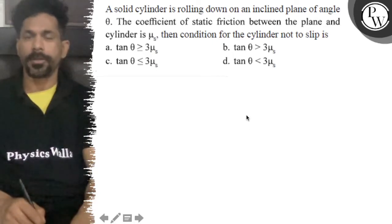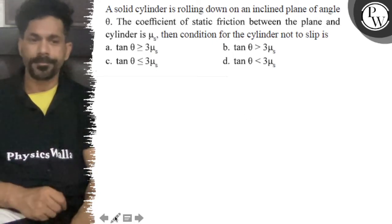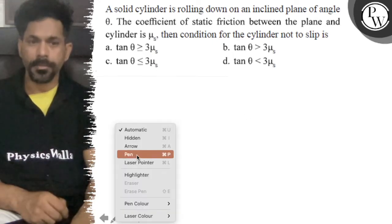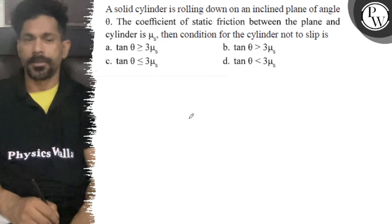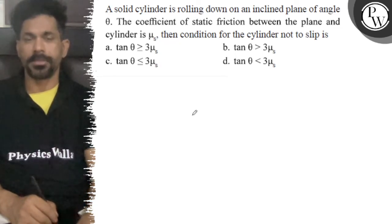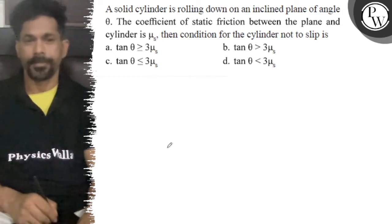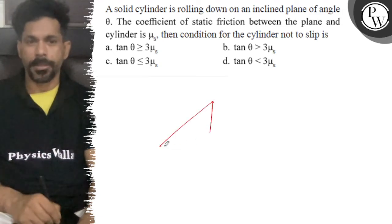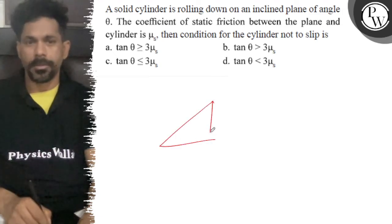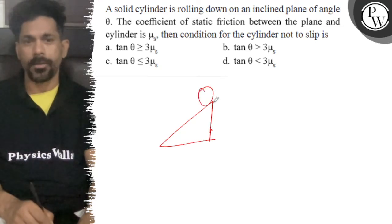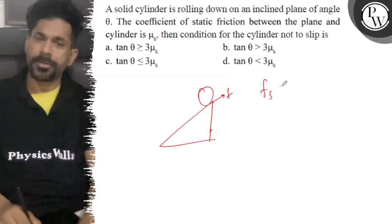A solid cylinder rolling down an inclined plane of angle theta. The coefficient of static friction between the plane and the cylinder is mu s. The condition for the cylinder not to slip is to be determined. As we can see in the diagram, the cylinder has a friction force acting on it — this is static friction.